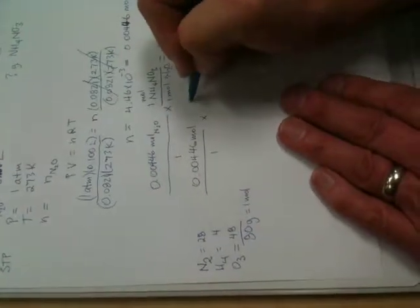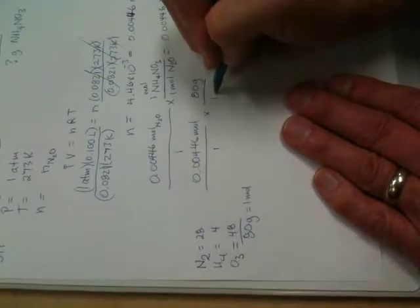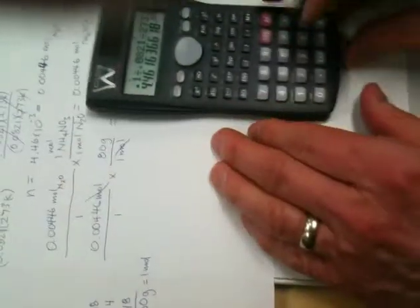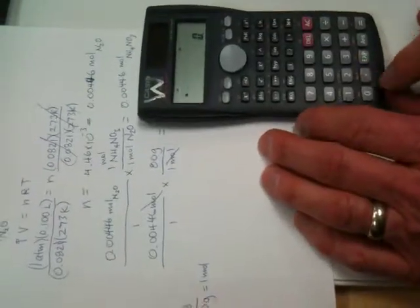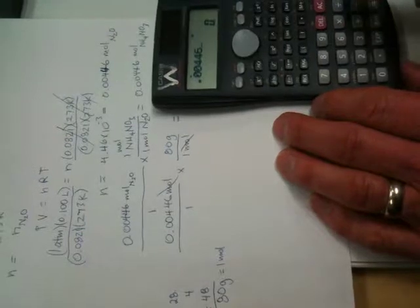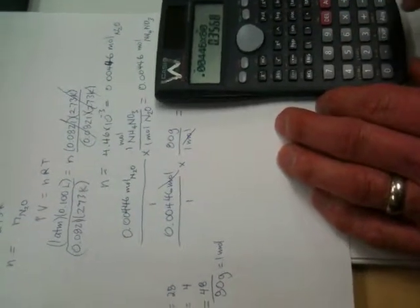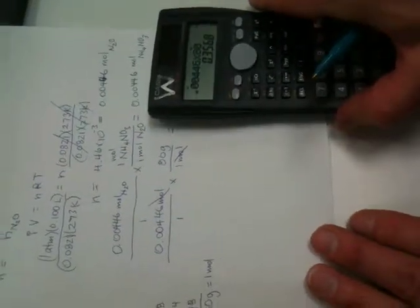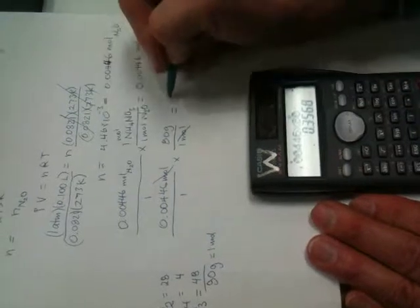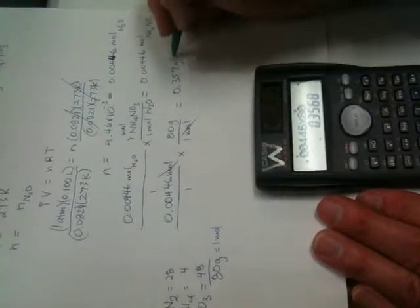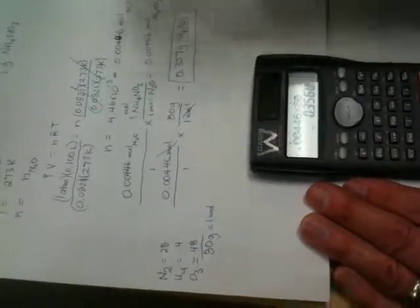So, we're going to have 80 grams on top and one mole on the bottom so that the moles cancel. Let's work that out. 0.00446 times 80 equals 0.3568. We're going to round that and make it 0.357, and that is grams of ammonium NH4NO3 nitrate. And there you have it.